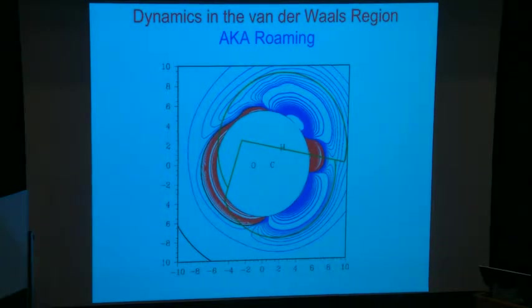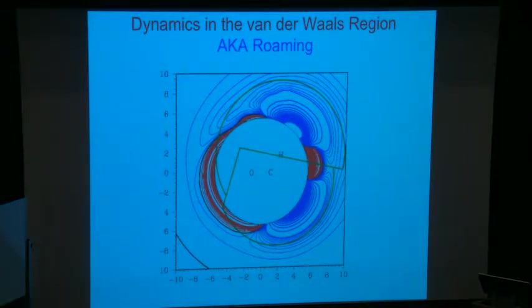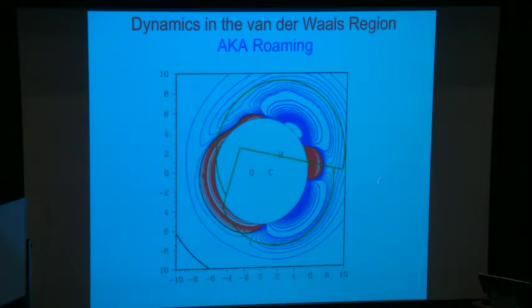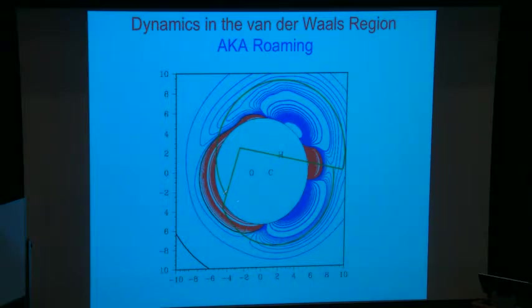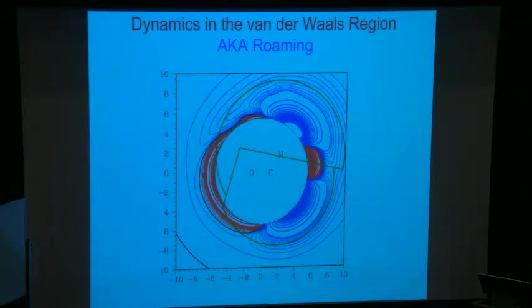That TST approach works pretty well, but it misses a key feature: if you start breaking a bond you've had motion in the direction of increasing CH bond length, and there's a dynamical preference to keep doing that rather than sampling over to the other side. So the statistical theory overestimates the roaming rate by roughly a factor of two at high energy. At low energies it actually underestimates, because then there's dynamical preference to bounce around more and find the roaming pathway. So at low energies you underestimate roaming, at high energies you slightly overestimate it.